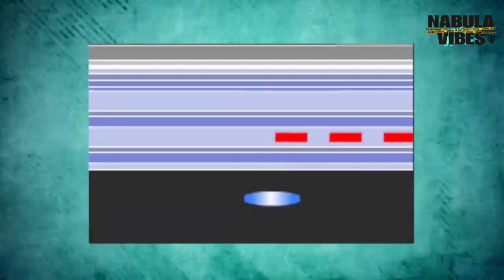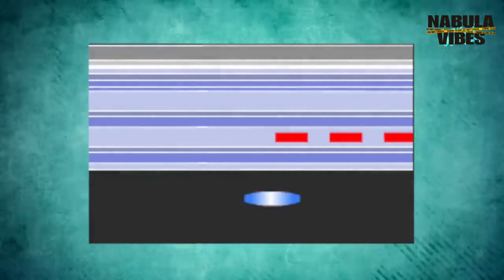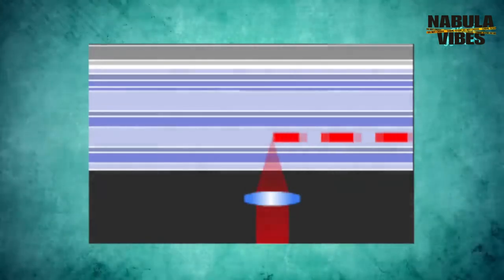Delve into the intricate relationship between oxygen and carbon dioxide in the bloodstream, as we explain how artificial respiration assists in maintaining this delicate balance.